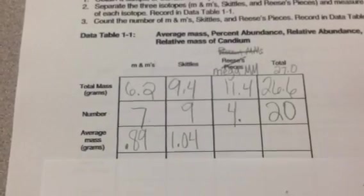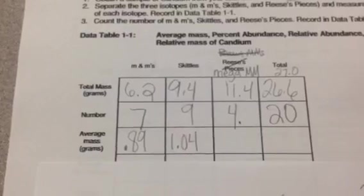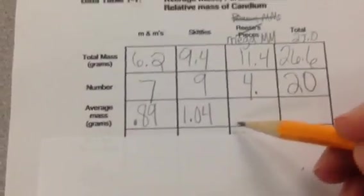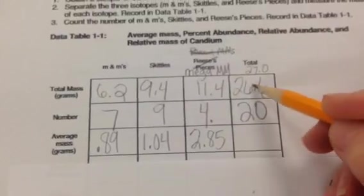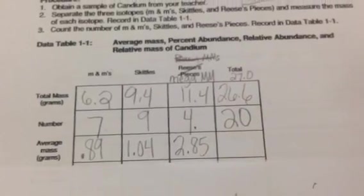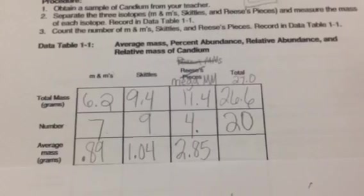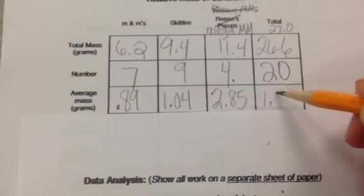We are then going to do 9.4 divided by 9 equals 1.044, and so we'll just round to 1.04. And you'll be doing yours. Your numbers are not going to be exactly the same as mine, especially if people ate the candy when they weren't supposed to. So 2.85, and again, we're dividing this number by the bottom. So 26.6 divided by 20 equals 1.33 for our total.